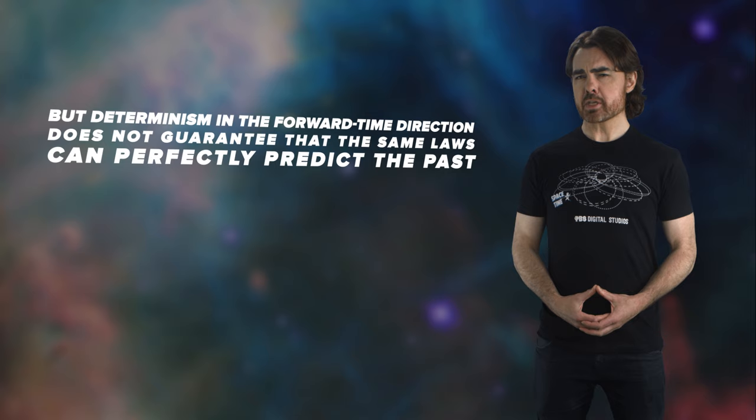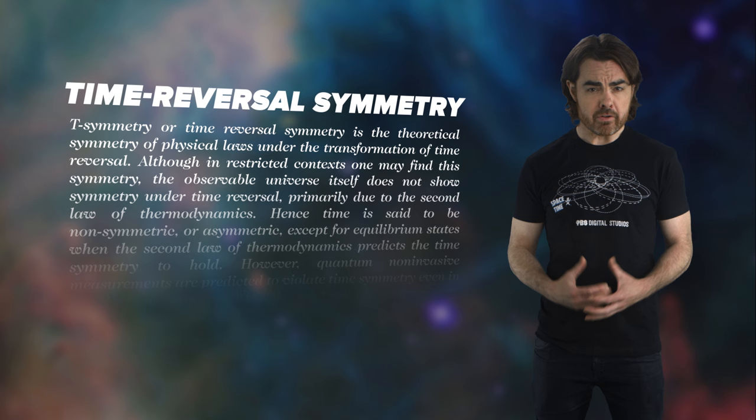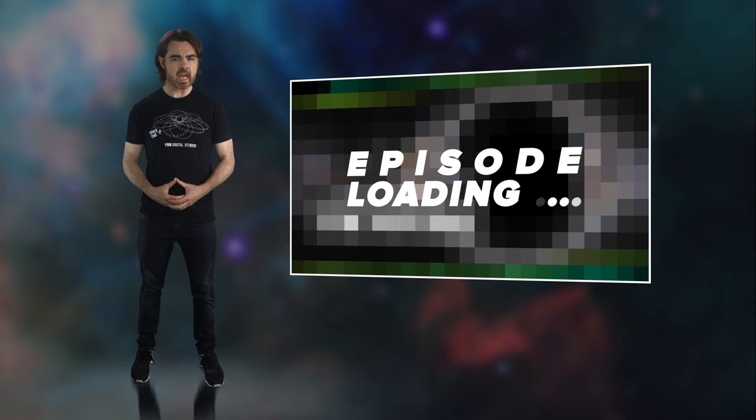And yet this sort of deterministic symmetry, time reversal symmetry, is essential for information itself to be conserved. Today, we learn why conservation of information is such a fundamental requirement of quantum mechanics. In a future episode, we'll see how this law might be broken by black holes.